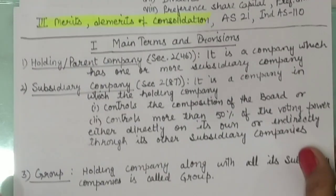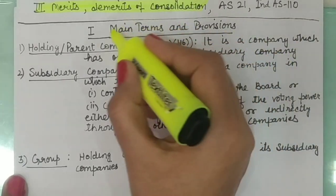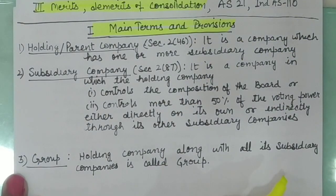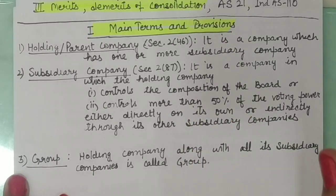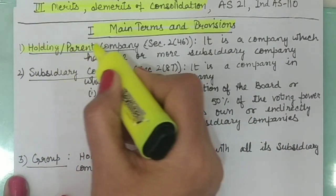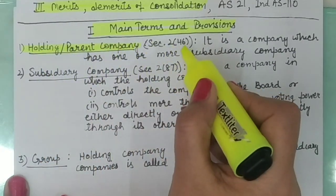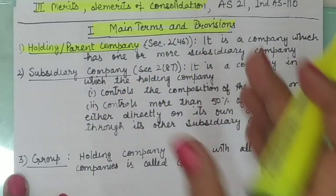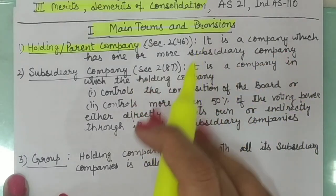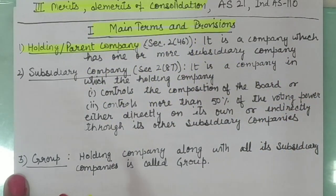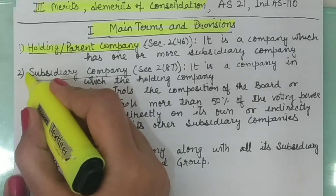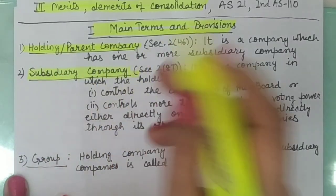Let us start with the first part — main terms and provisions. The very first thing is: what is a holding or parent company? As per Section 2(46) of the Indian Companies Act, a holding company is a company which has one or more subsidiary companies. This definition simply says that if a company has a subsidiary company, it is referred to as a holding company.